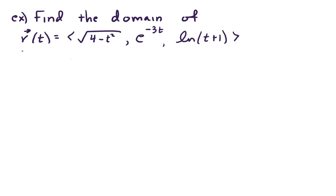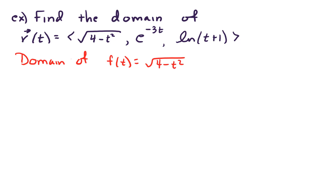Let's find the domain of our first component — I'm going to call that f of t — which is the square root of 4 minus t squared. Remember, if we're working with real numbers, we can only take the square root of non-negative numbers. In other words, this radicand must be greater than or equal to zero.